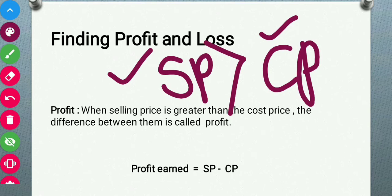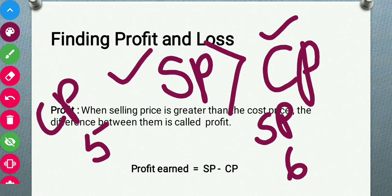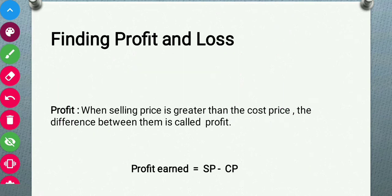Most of the time shopkeepers earn a profit because whatever amount they get through selling is greater than the price at which they brought those articles into their shops. For example, suppose a shopkeeper bought a pen for rupees five — that is its cost price — and sells it to customers at rupees six. Here the selling price is more, so the shopkeeper earned a profit of one rupee. When selling price is greater than cost price, the difference between them is called profit.